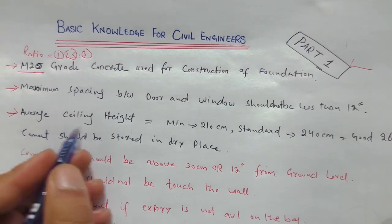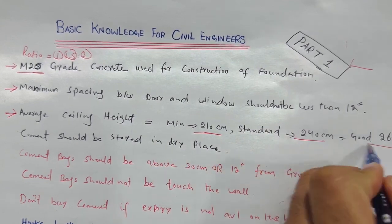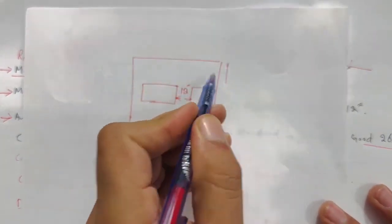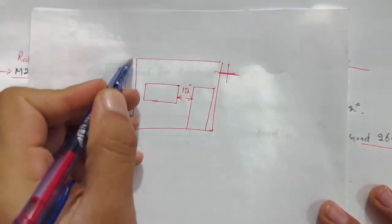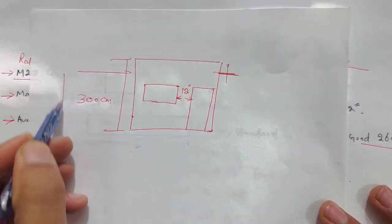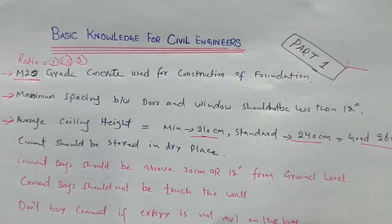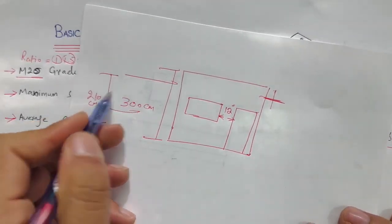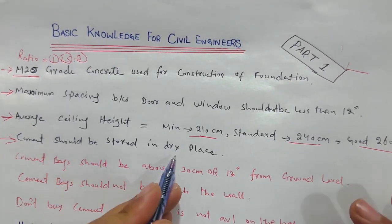Next, the average ceiling height: minimum is 210 centimeters, standard is 240 centimeters, and good is 260 centimeters. Suppose the total height of the room is about 300 centimeters or three meters. The ceiling height minimum is 210 centimeters, the standard is 240 centimeters, and a good ceiling height is 260 centimeters. The overall standard room height is 300 centimeters or three meters.